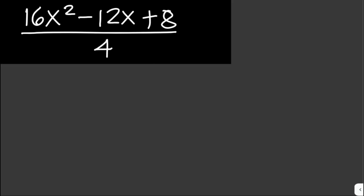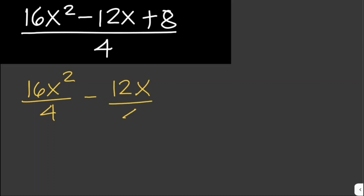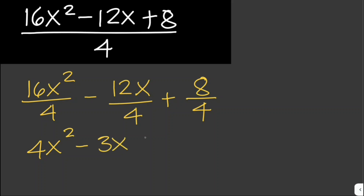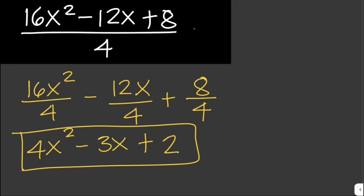Let's solve another one. This is 16x² over 4, minus 12x over 4, plus 8 over 4. Dividing each term: 16 divided by 4 is 4, copy x²; minus 12 divided by 4 is 3, copy x; plus 8 divided by 4 is 2. Therefore, the answer is 4x² minus 3x plus 2.